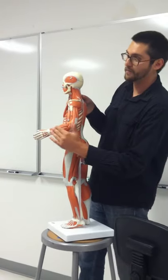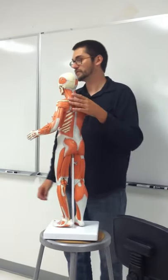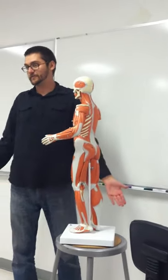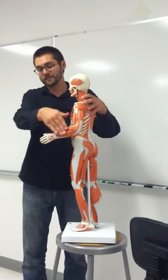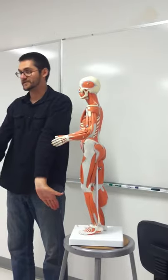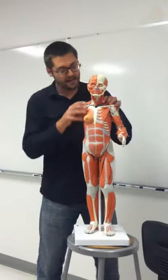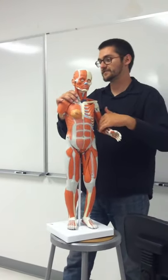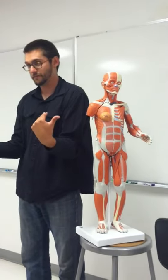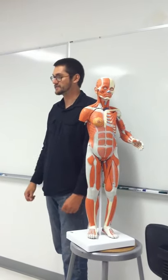On the forearm: the posterior forearm muscles are extensors — they extend the hand at the wrist. The anterior forearm muscles are flexors. Brachioradialis, pronator teres, and supinator — scratch those off your list; don't worry about those ones. Remove those from your list.